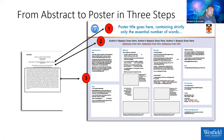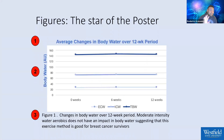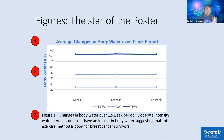Because a poster is a graphical display, the figures are really the stars of the show. Here is a figure that Amanda and I made, and I'm going to show you the three components. Component number one is the figure title. The title either summarizes a major result or states the type of analysis you'll find in the figure. In this case, it says 'average changes in body water over a 12-week period,' so hopefully the figure is about body water over a 12-week period — and so far it checks out.